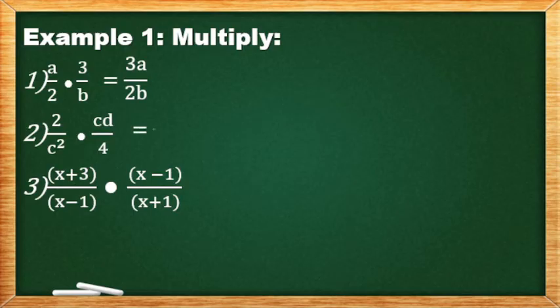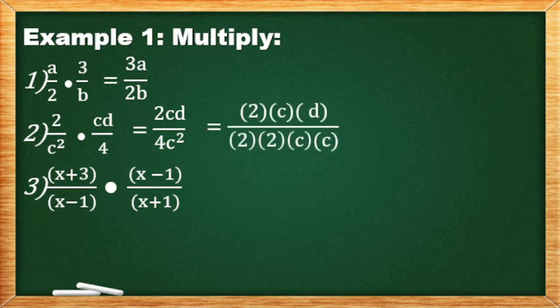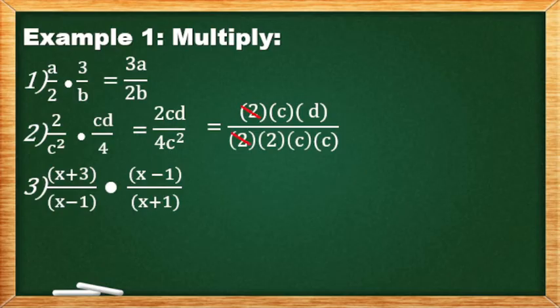Number 2: pagtabihin mo na natin. So, 2CB all over 4C². Saka na natin i-expand yung mga factors ng numerators. Sa denominators — kasi sa numerators, prime numbers na sila at the exponent of the variable is 1. So, ikuklose natin sila sa parentheses. The prime factor of 4 is 2×2. C squared — since the exponent of C is 2, just copy C 2 times. That's why meron tayong dalawang C sa baba. Maka-cancel natin yung 2 at yung C. So, the final answer is D/2C.